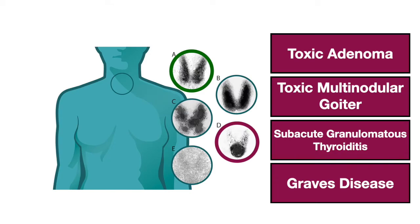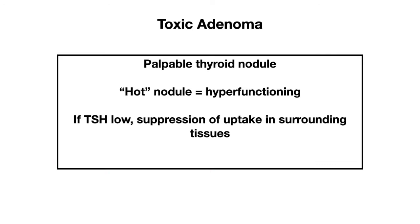Now let's move on to image D — the underlying cause here is a toxic adenoma, which is a benign tumor. It typically presents as a palpable thyroid nodule on clinical exam, sometimes found incidentally. A toxic adenoma presents as a hot nodule, or hyperfunctioning nodule, which appears as a darker nodule on the scan. Because this nodule is producing thyroid hormone, TSH will be low in most cases, leading to suppression of uptake in the surrounding tissue. The rest of the gland responds appropriately by inhibiting thyroid hormone synthesis, but the toxic adenoma functions independently of TSH.